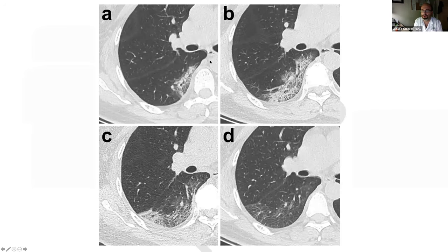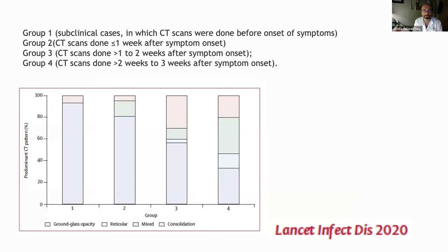Here is an example of what these authors showed us — the typical progression from the early to progressive, peak, and absorption stages. It's relevant that these authors included patients who were not severe — not patients in the ICU. This publication is also important because it shows how the time sequence of radiological signs changes over the different weeks, starting with subclinical ground glass opacities in the initial onset of symptoms.